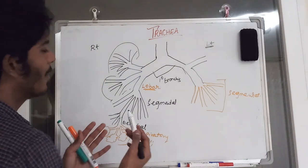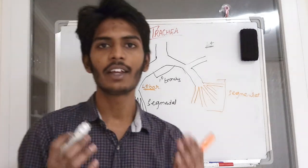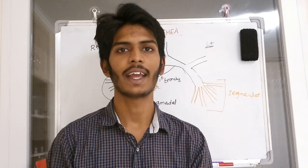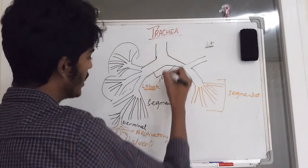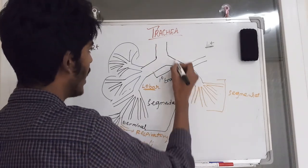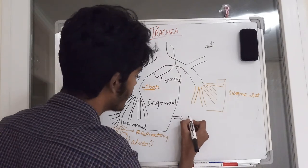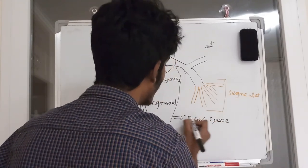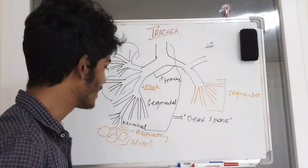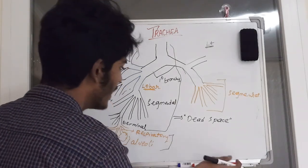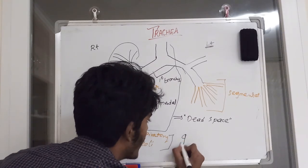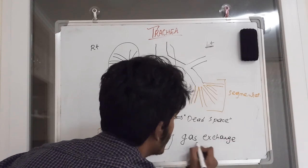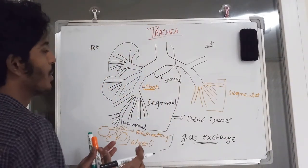In physiology, the airway is divided into the conducting zone and the respiratory zone. From the trachea to the terminal bronchioles is the conducting zone — also called the dead space — where air is present but no gas exchange occurs. From the respiratory bronchioles to the alveoli is the respiratory zone, where actual gas exchange takes place.